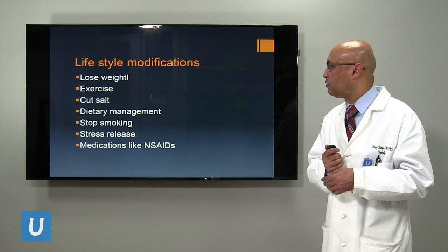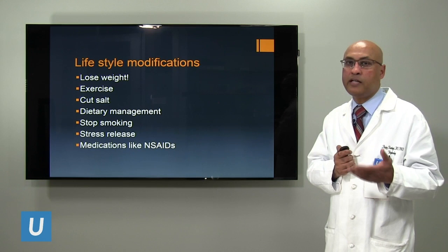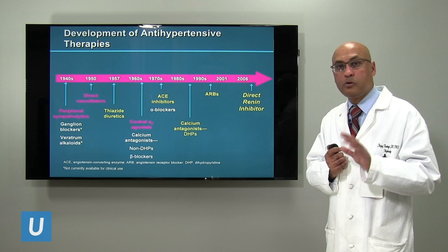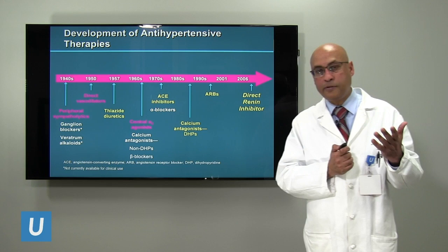Avoid medications like ibuprofen and Motrin on a regular basis — chronic use of this class of medication should definitely be avoided. If you've done everything — lost weight, cut back on salt, made lifestyle changes, exercised, stopped smoking, and avoided non-steroidals — but your blood pressure is still above goal, that's when we start adding medications.